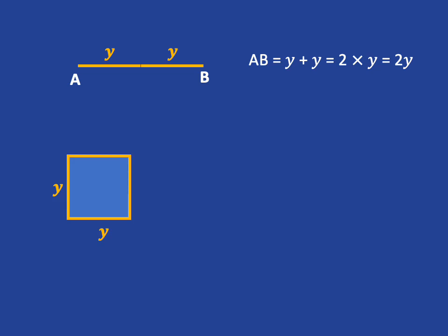If we look at the square, which has a side length of Y, its area will be Y times Y, which is Y squared.